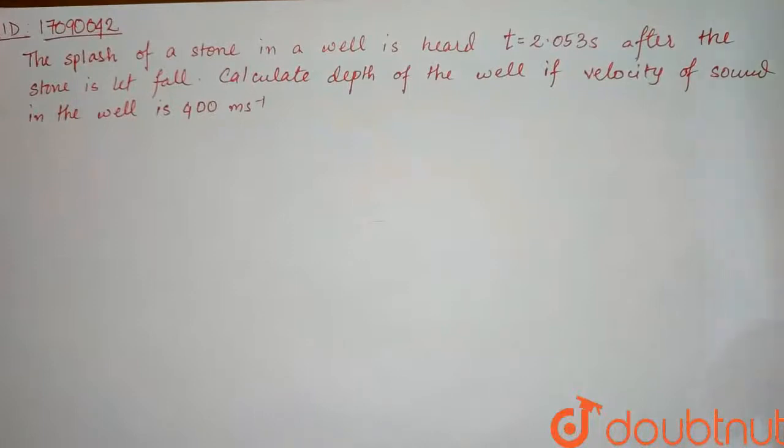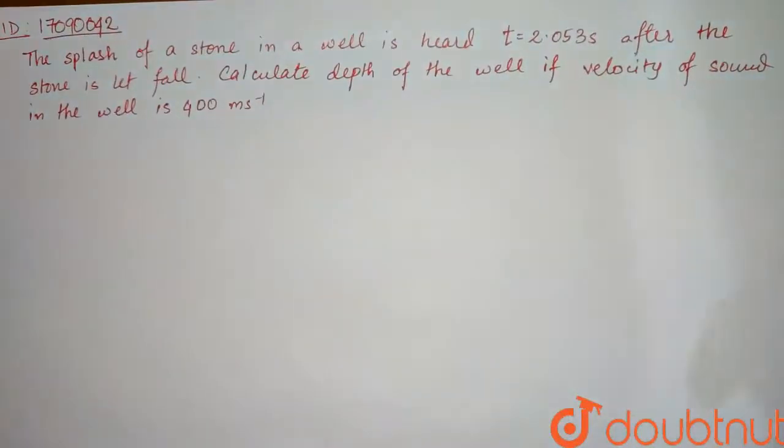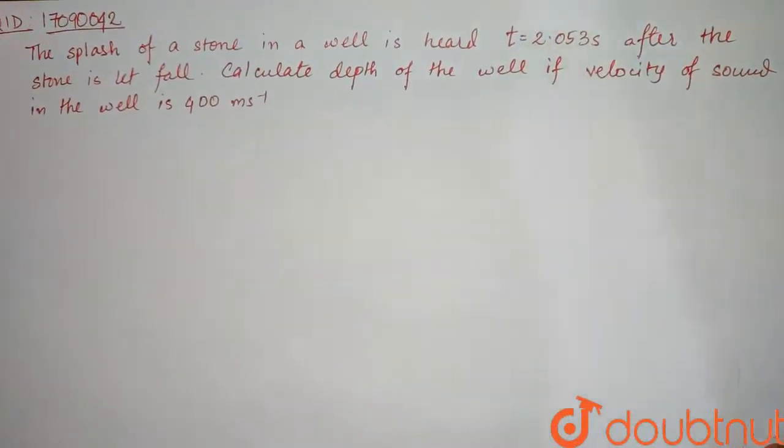Hello everyone. Let's see what we have asked today. The splash of a stone in a well is heard t equals 2.053 seconds after the stone is let fall. Calculate depth of the well if velocity of sound in the well is 400 meters per second.